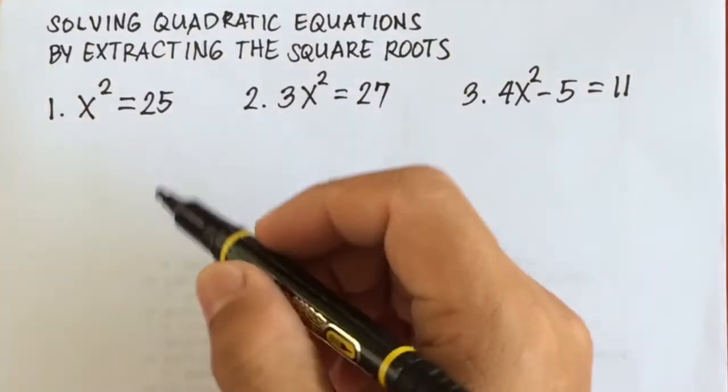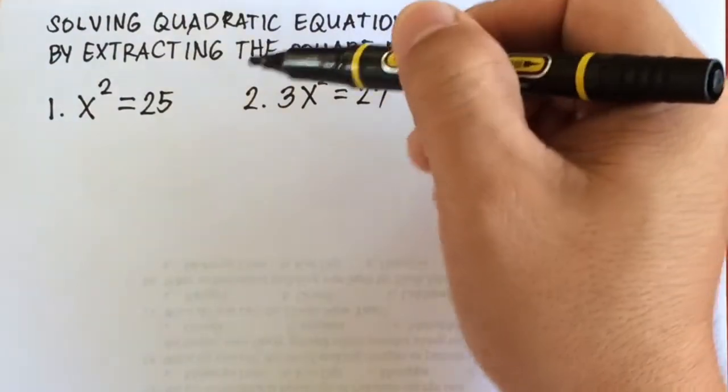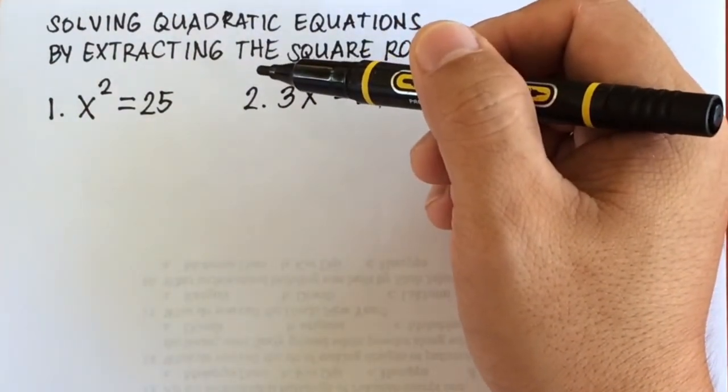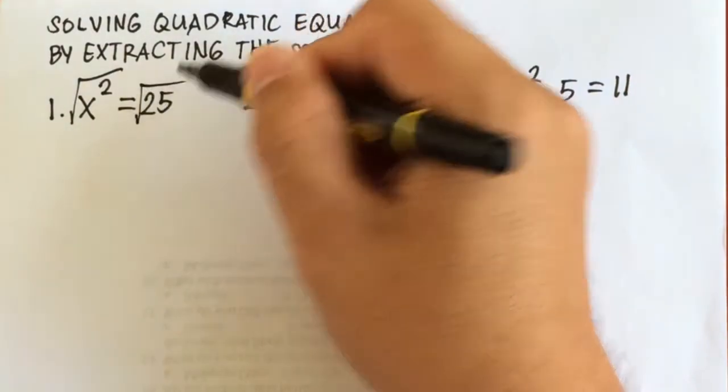Let's have number 1. Now, extracting the square roots for x squared equals 25, this means you're going to extract the square roots of both sides. So, we're going to have square root of x squared and square root of 25.